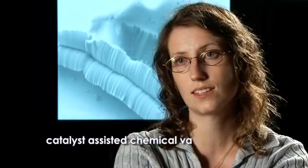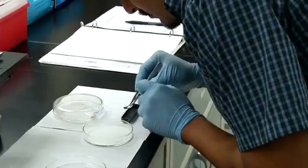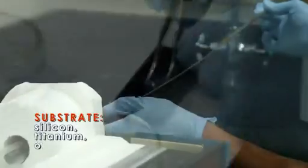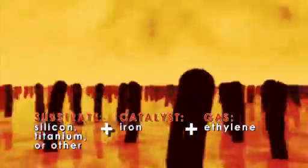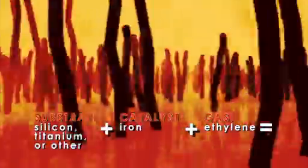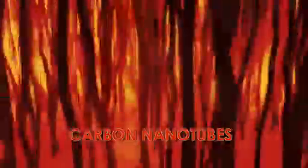The method that we use is called catalyst-assisted chemical vapor deposition, and that grows carbon nanotubes on a substrate. Put the substrate in this tube. You heat the tube up to about 750 degrees centigrade, and you flow a gas, and the gas has carbon in it. Because of the catalyst layer, you start to assemble these tubes. Carbon takes a very specific form as it grows.